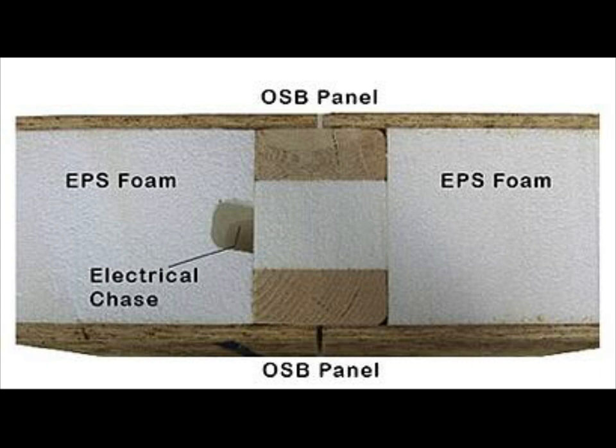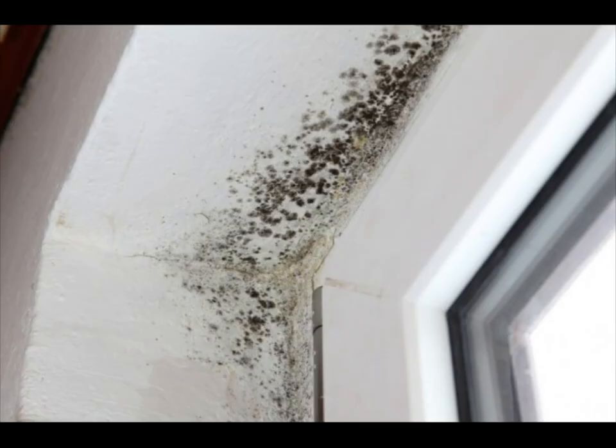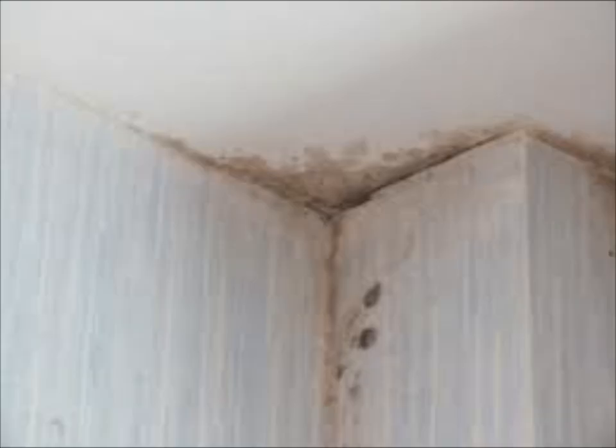Thermal bridging not only creates areas of heat loss, it can be a prime area for mold or wood rot due to condensation. When warm air from inside the house escapes through these bypasses, moisture condenses on the studs or rafters and that's where the frost forms. When the outside temperature rises again and the frost thaws, it creates an environment where water can collect and cause mold.